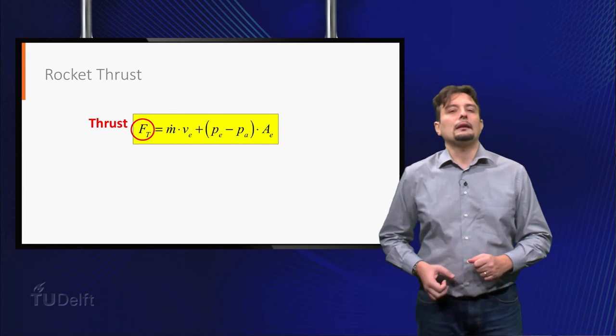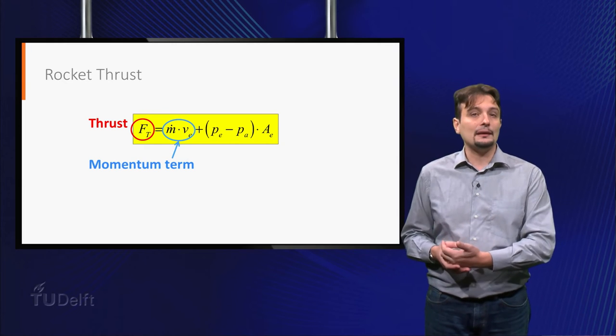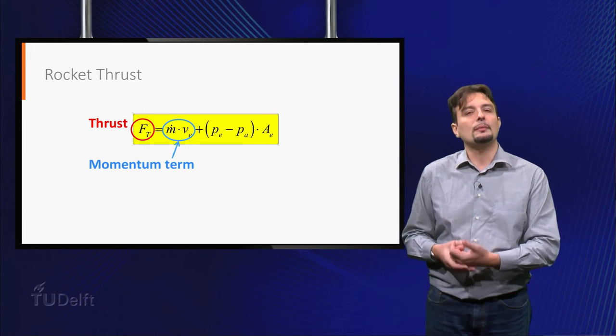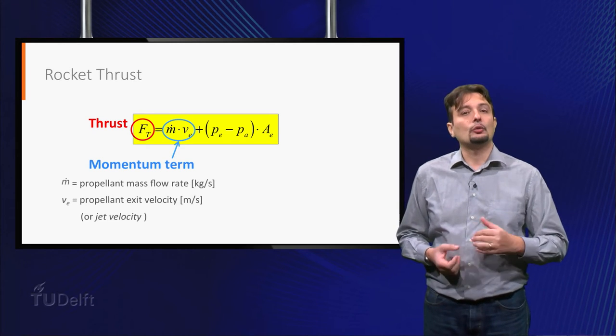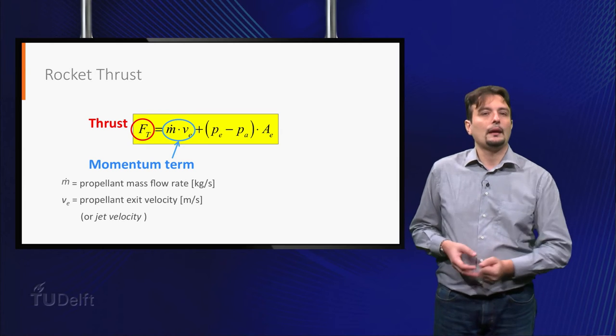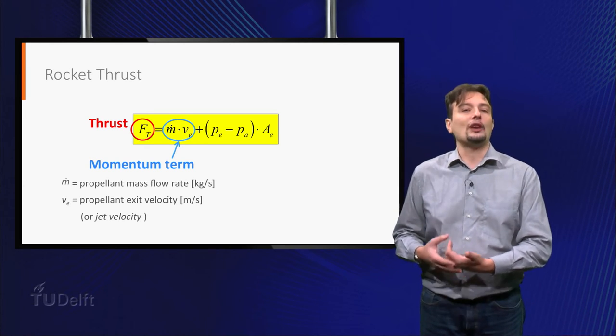The first one is what we call momentum term. This is the force generated by the actual momentum exchange between propellant and rocket. This term is proportional to the mass flow rate of propellant and to the velocity at which the propellant is expelled, or jet velocity.